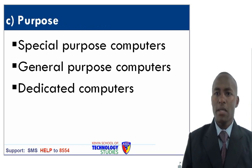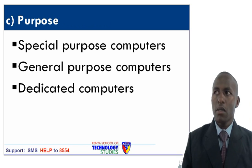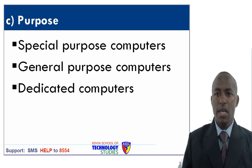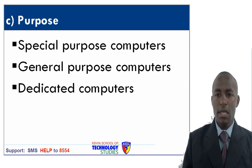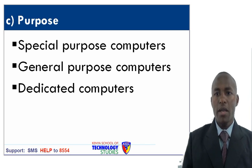Under purpose, we have three types of computers: special purpose computers, general purpose computers and dedicated computers. Special purpose computers have been designed to perform a specific task only. General purpose computers have been designed to carry out a wide range of tasks. Dedicated computers are general computers that are limited to one task only, for example word processing.